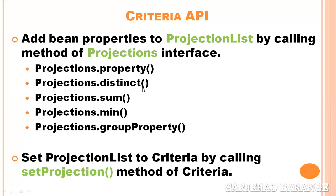The distinct function is used when we want to remove duplicate values — if we want to eliminate duplicate elements, we use the distinct function. For group functions like sum, min, max, etc., if we want to include them in the select clause, we can write sum, min, max or whichever function is needed. For group property, the group property function is available.